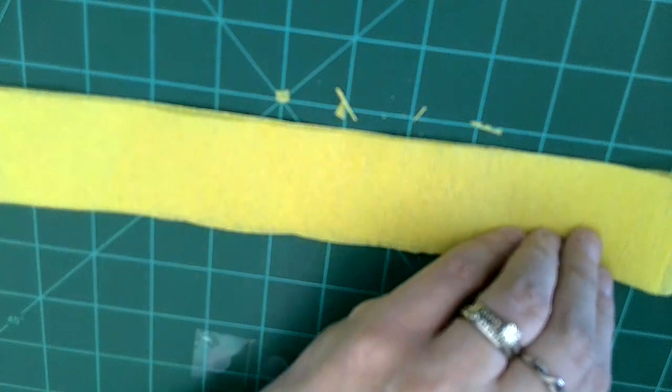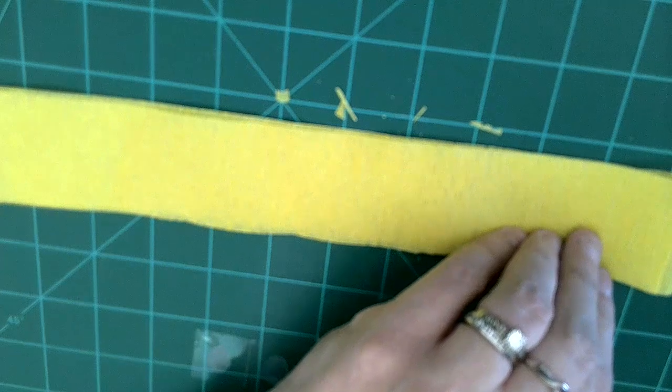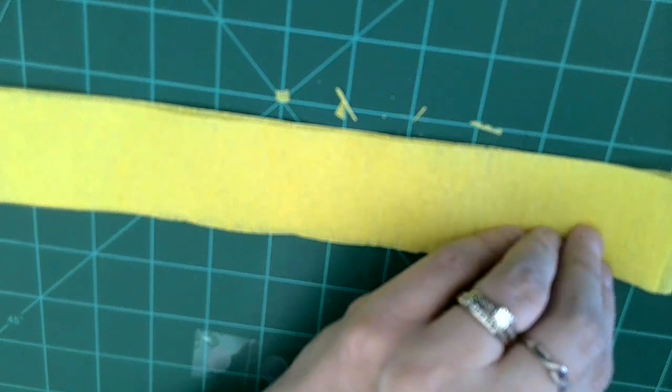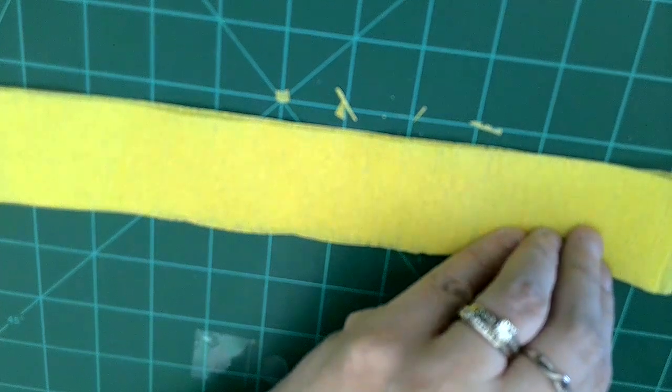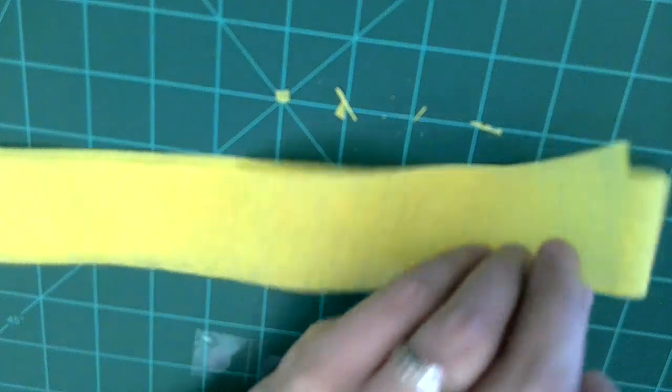For our last flower that I'm going to demonstrate today, this is going to be a flower that looks like a carnation. So first, what you'll do is you'll take that streamer.